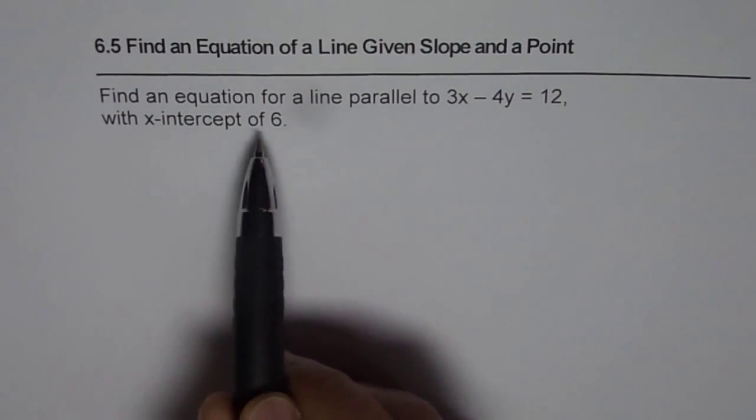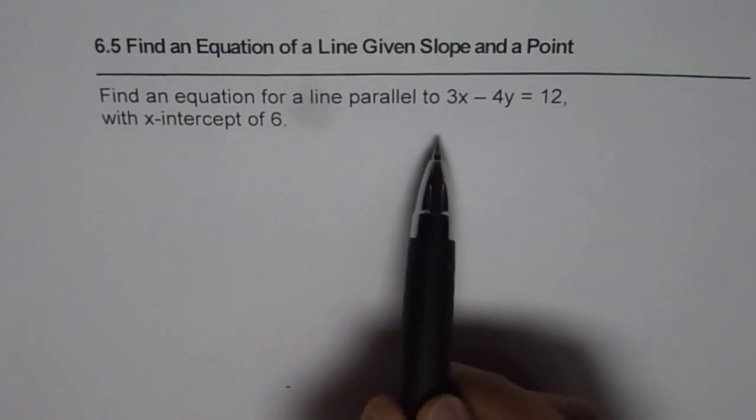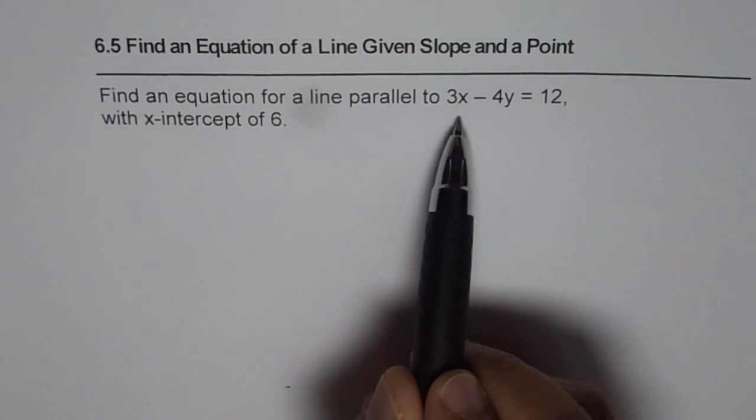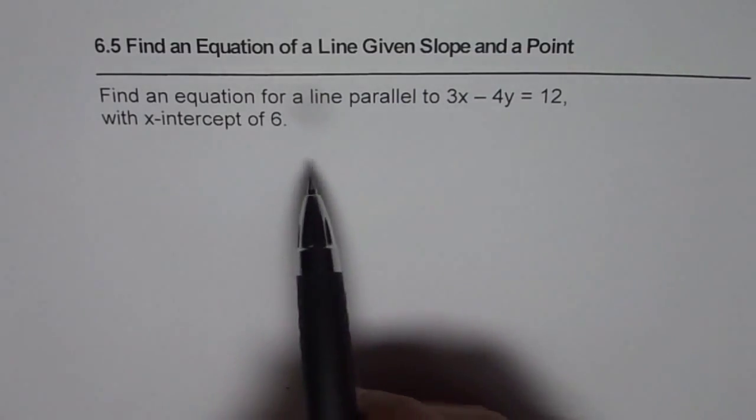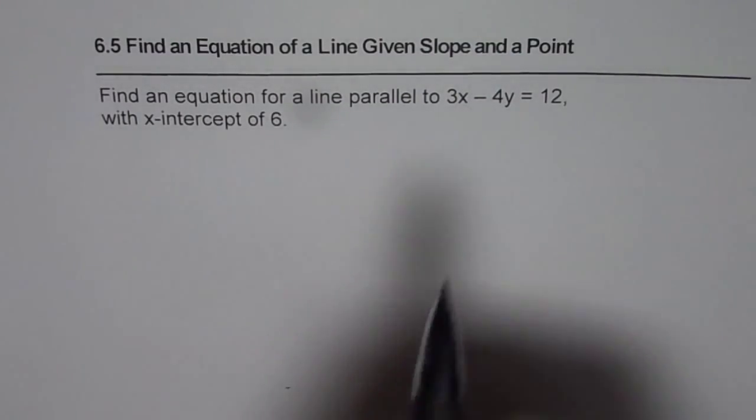So in this case we are given a point which is the x intercept and we are also given the slope. Slope is parallel to the given line. So both the things are kind of indirect. So let us figure it out.